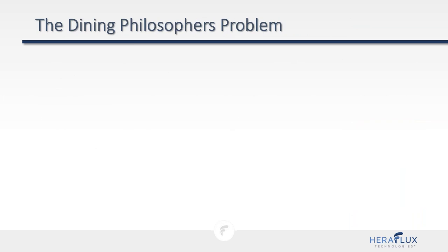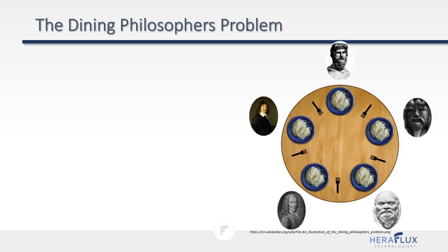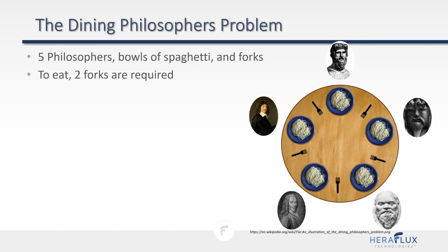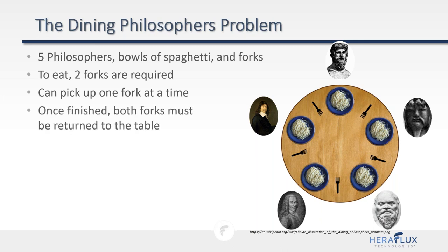If you have a formal education in computer science, you've probably heard of the dining philosophers problem, proposed by Edsger Dijkstra — a famous Dutch computer scientist and Turing Award winner — around 1956. The setup: five philosophers sit at a table with five bowls of spaghetti and five forks. To eat, you need two forks. Each philosopher can only pick up one fork at a time. Once done, both forks must be returned. Any time a philosopher isn't eating, they are thinking. The problem: how do we get all philosophers to eat?